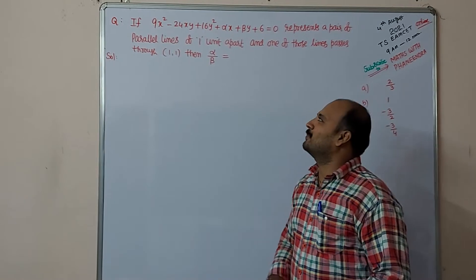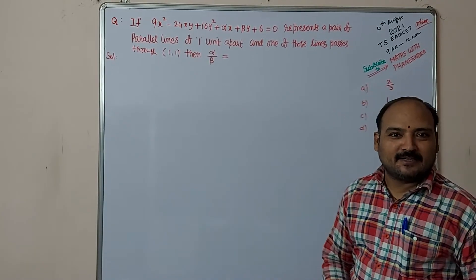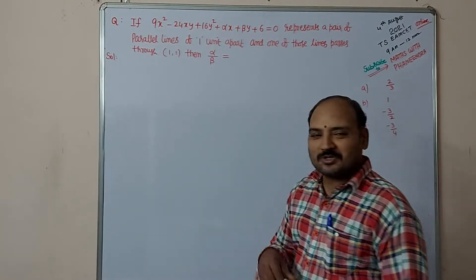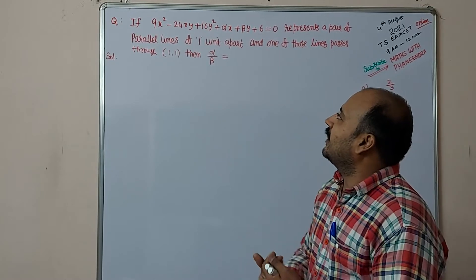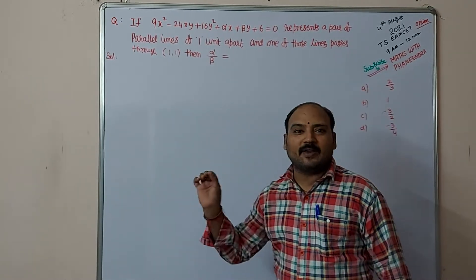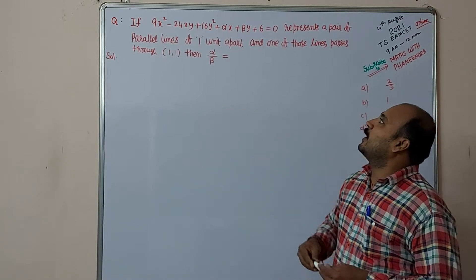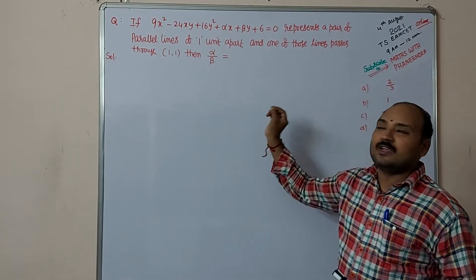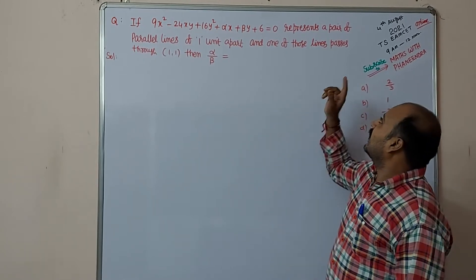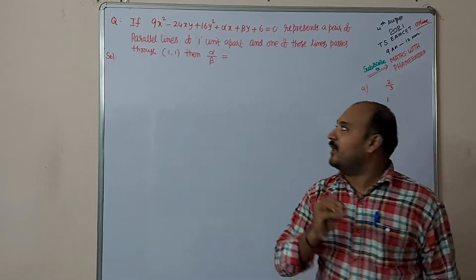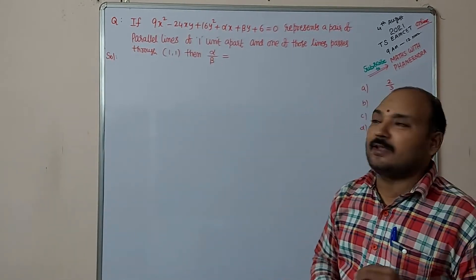The next question is also from pair of straight lines. Here the question is: if 9x² - 24xy + 16y² + αx + βy + 6 = 0 represents a pair of parallel lines of one unit apart and one of those lines passes through the point (1,1), then the value of α, β is.